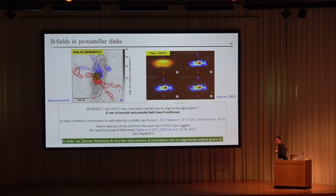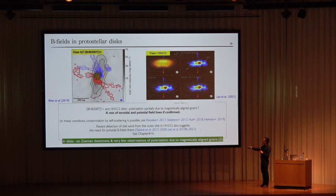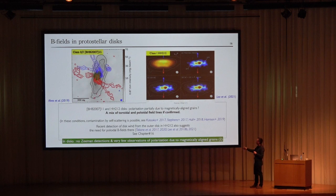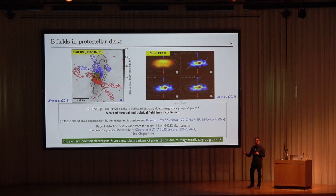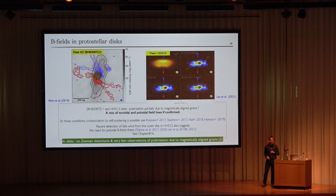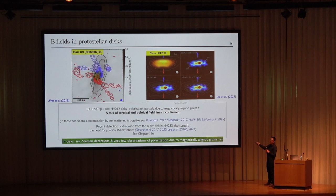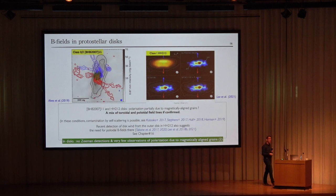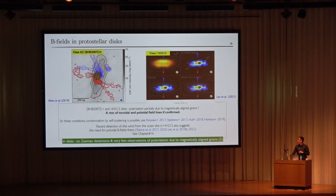Going down in scale, there have been two pieces of evidence for magnetic field at the disk scale. In the famous HH212 protostar, observations indicate a mix between toroidal and poloidal magnetic field lines, though it becomes ambiguous because self-scattering can also produce polarization. If this poloidal field is confirmed using dust polarization, it means the field is poloidal in the disk, which is required in order to launch MHD disk winds, as we will see later this week in a talk by Sylvie Cabrit.